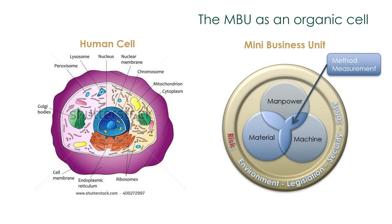Here we have, side by side, diagrams of a human cell and an MBU. The human cell is far more complex than an MBU, but they share characteristics. For example, the cell has a membrane that protects it from outside aggression. Similarly, the MBU has to protect itself from risk — we have to manage risk at MBU level. A side question to think about: what would be to the MBU what DNA is to a cell? Within the MBU, environment, risk, material, manpower, and machines are managed and brought together by method and measurement.